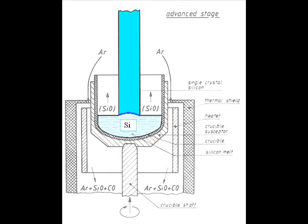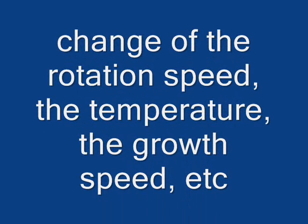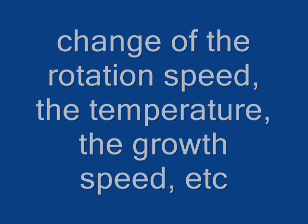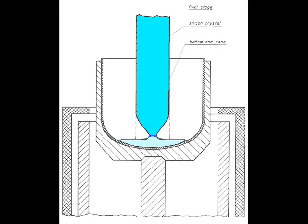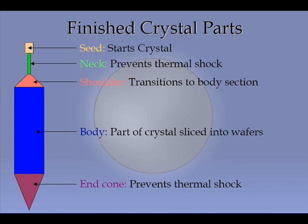This is where crystal growing becomes an art, where the change of rotation speed, temperature, growth speed, or any other parameters must be manipulated to achieve homogeneity. Once the desired length has been reached, the seed crystal is withdrawn gradually by increasing the pulling rate bit by bit, which leads to a reduced diameter. This is done to avoid thermal shock or rapid cooling, which could introduce large temperature gradients and produce stress that will cause plastic deformation and destroy the silicon.